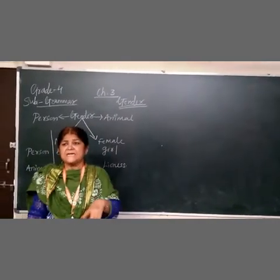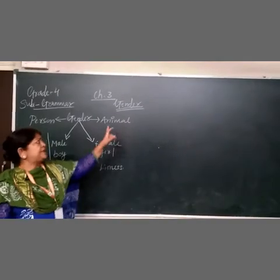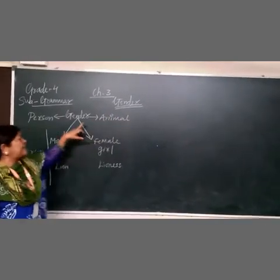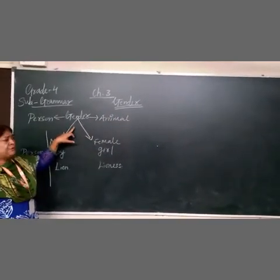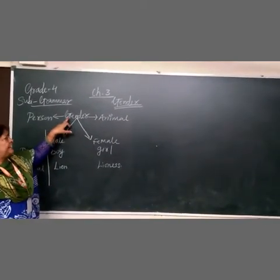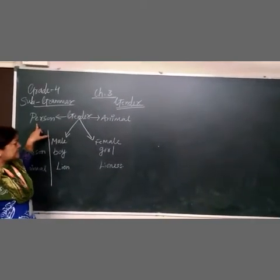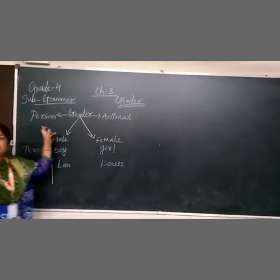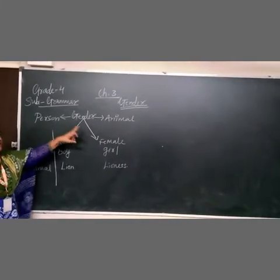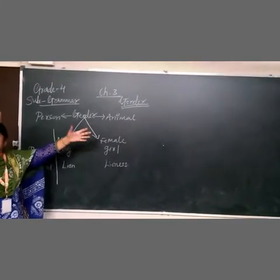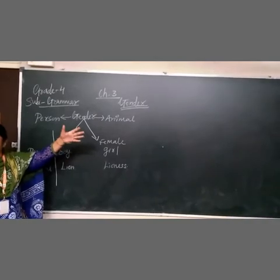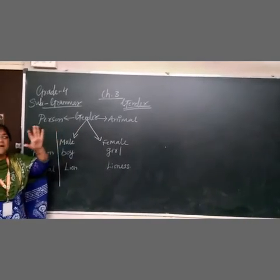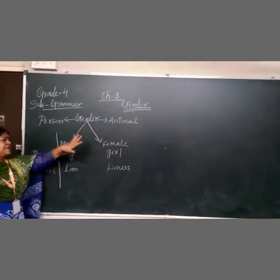Today we start lesson number 3: Gender. Here I have prepared a chart for you. Gender covers person and animal. Person is number 1. Animals include dog, cat, elephant, and giant — those are animals.